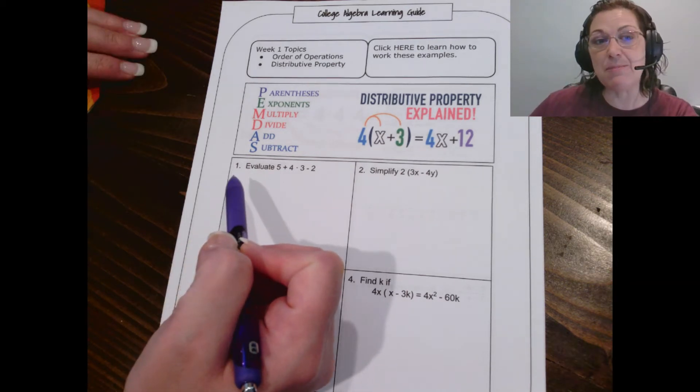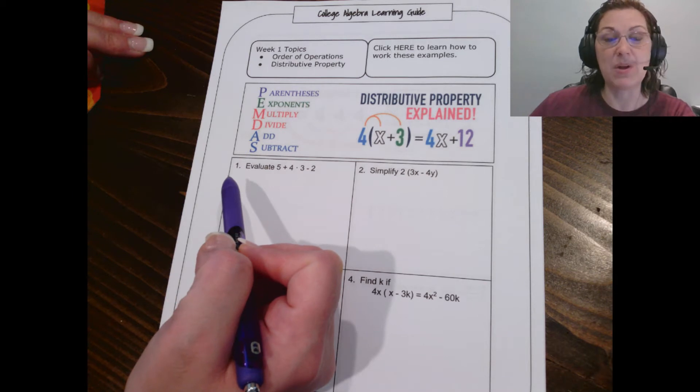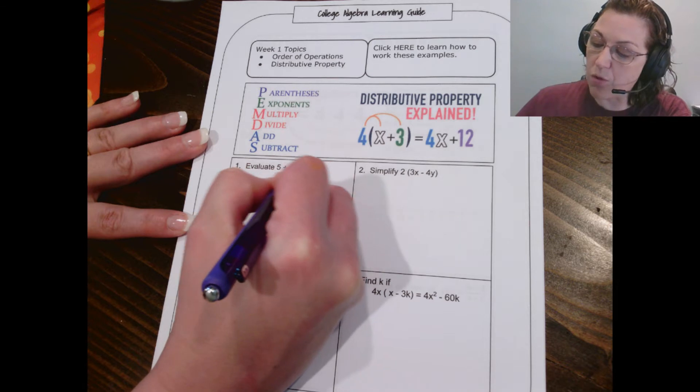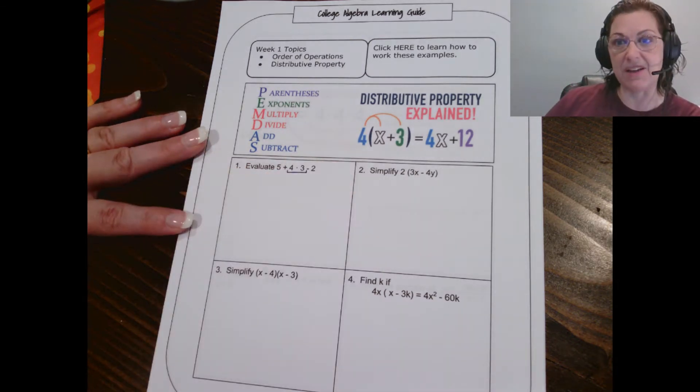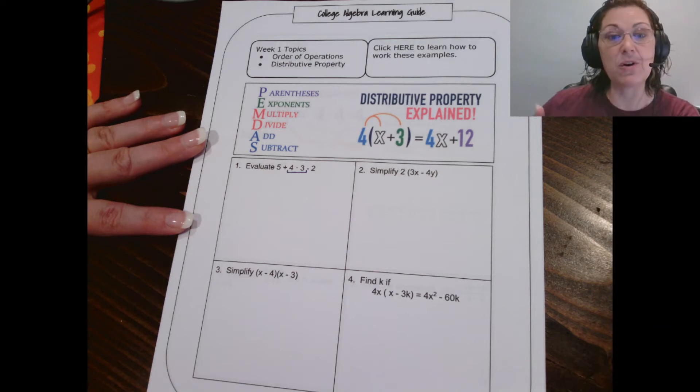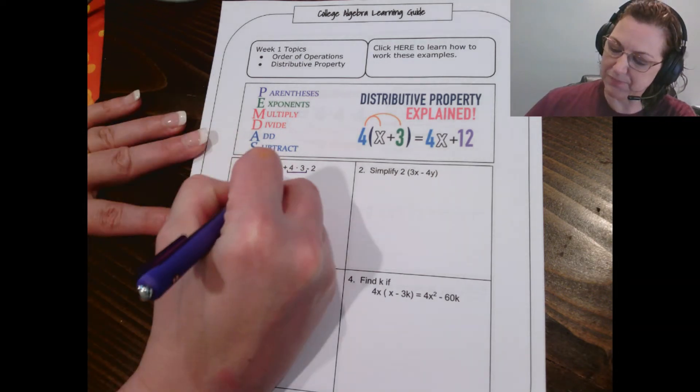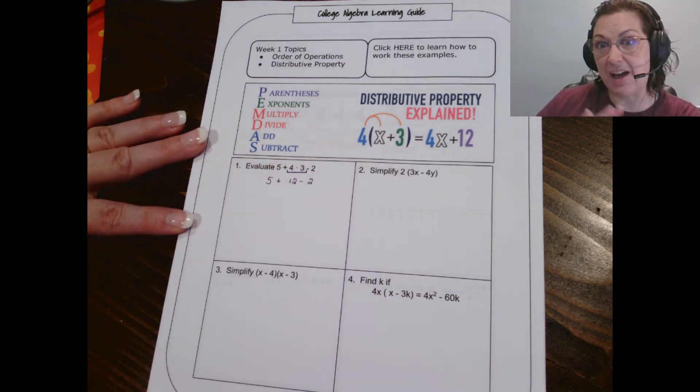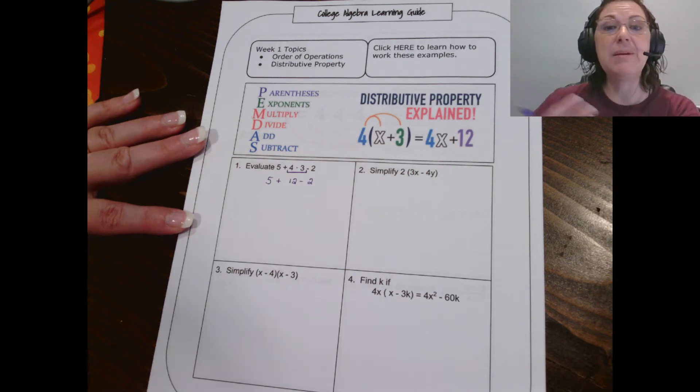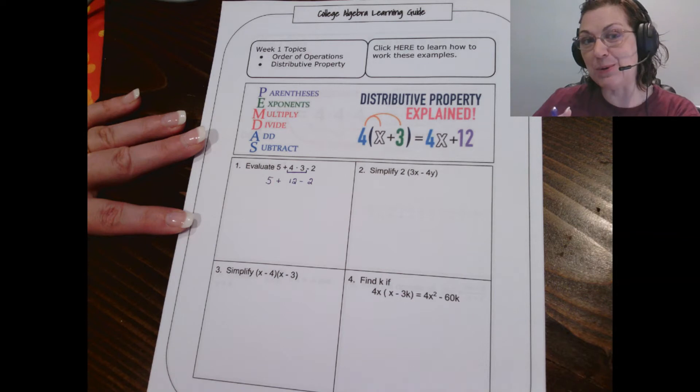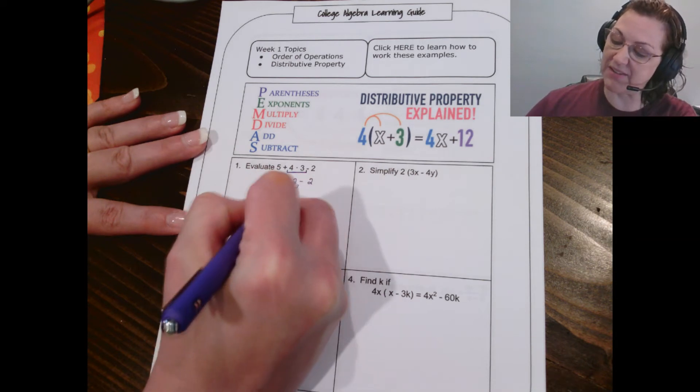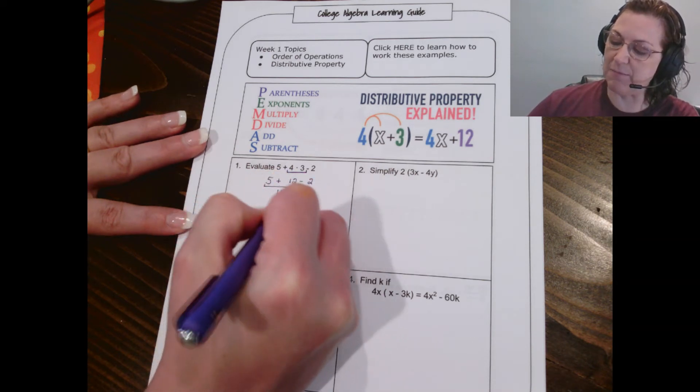In this problem, we don't have any parentheses, so we actually get to skip that step. We also don't have any exponents, so we can skip that step as well. The next step we come to is to multiply. So, that means that we're going to multiply or divide whichever comes first in order from left to right. In this particular problem, we're going to multiply the 4 times 3 first, which will give us 12. Notice that I left the 5 plus and the minus 2 after, because now that we have multiplied, we're going to add or subtract in order from left to right. We're going to add 5 plus 12, which will give me 17, minus 2, which would then give me 15.